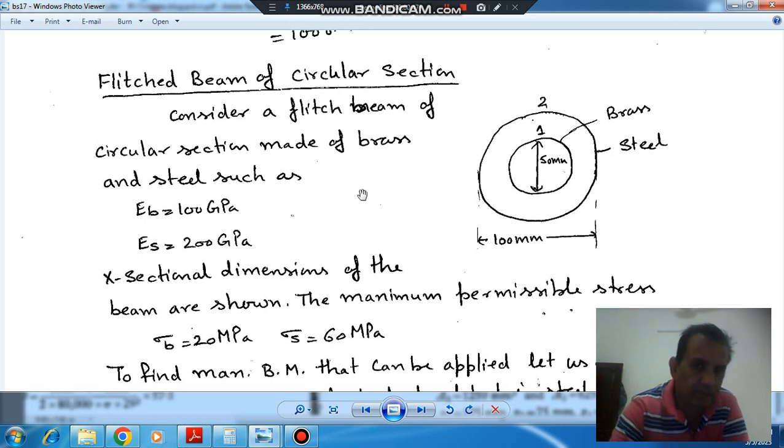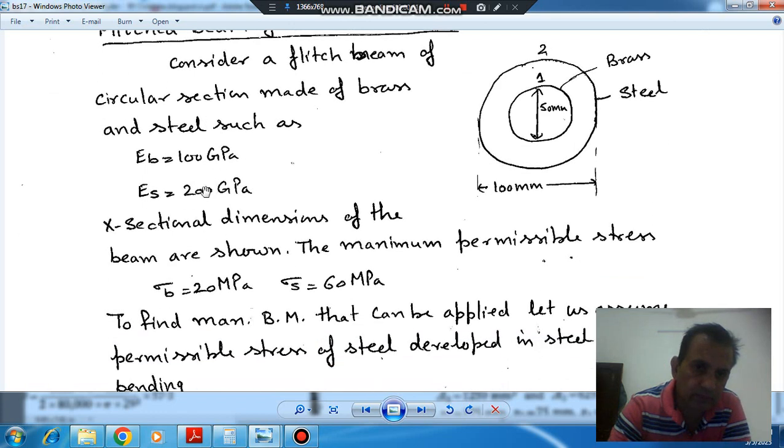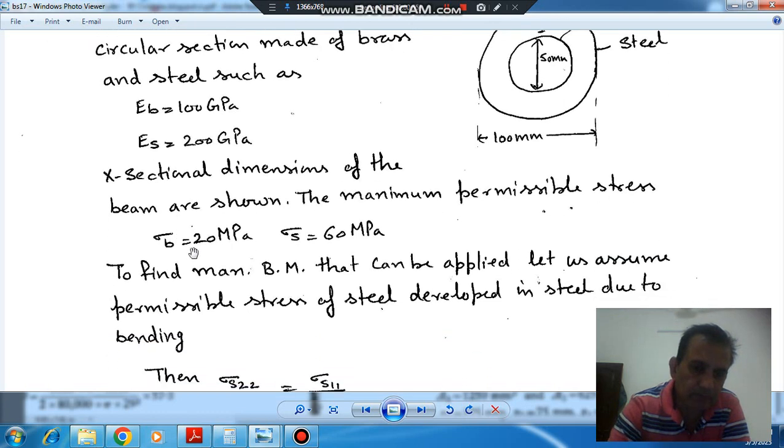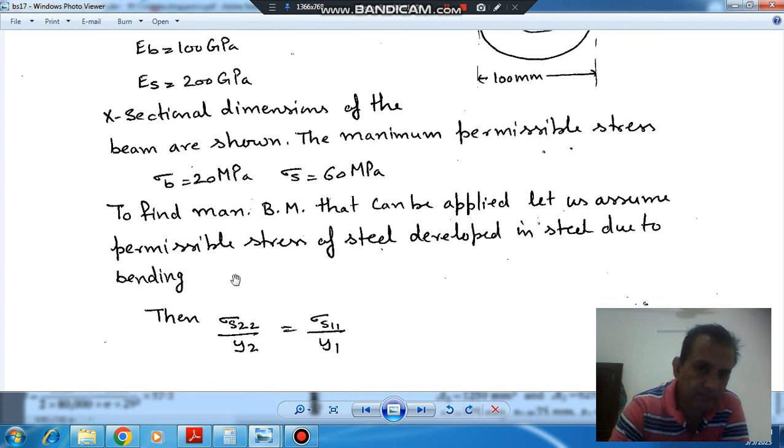Modulus of elasticity for brass is 100 GPa, for steel is 200 GPa. And permissible stress for brass is 20 MPa, for steel is 60 MPa.